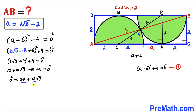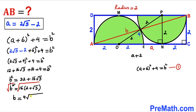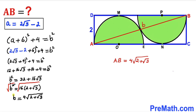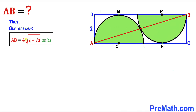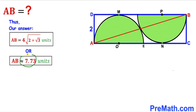Combining like terms gives b² = 32 + 16√3. Factoring out 16: b² = 16(2 + √3). Taking the square root of both sides: b = 4√(2 + √3). Since lowercase b represents diagonal AB, our answer is AB = 4√(2 + √3) units, which is approximately 7.73 units.